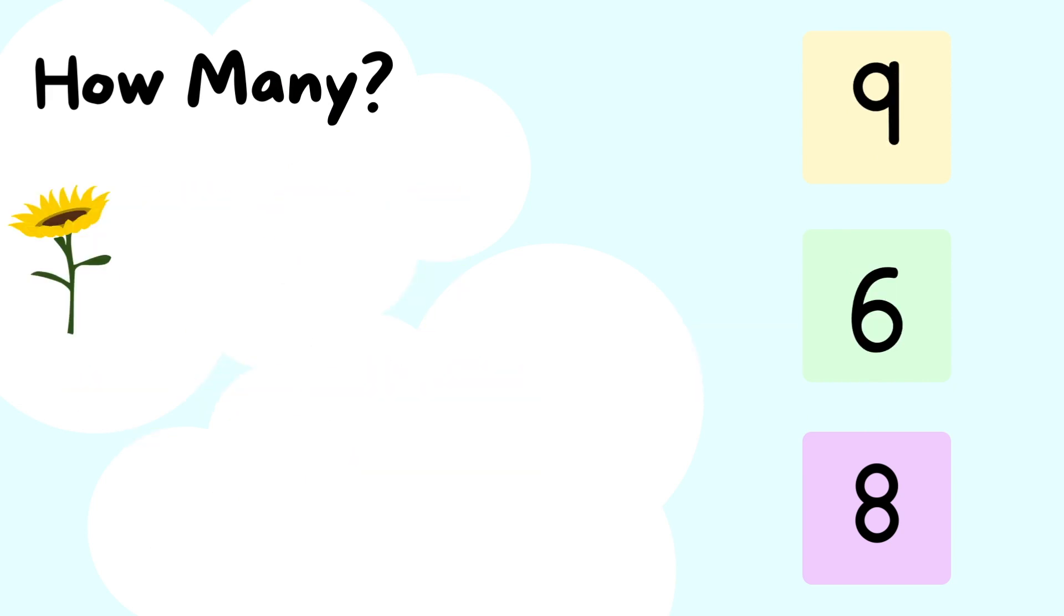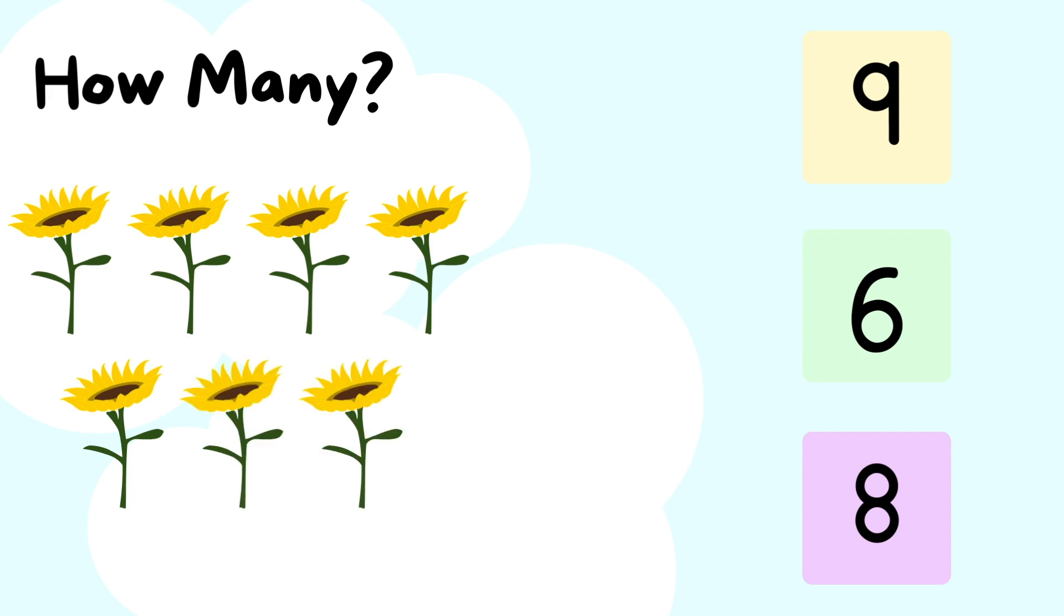Let's keep counting. How many flowers do you see? One. Two. Three. Four. Five. Six. Seven. Eight. Eight flowers. You got that right.